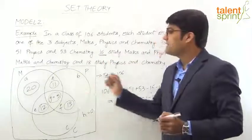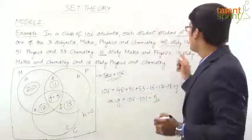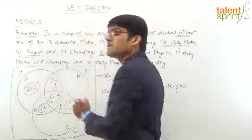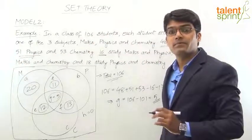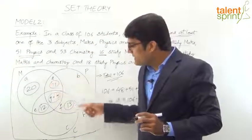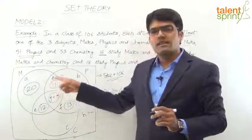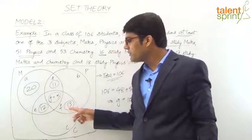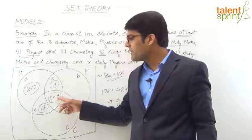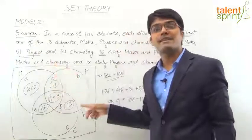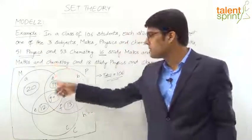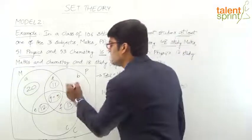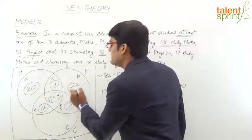For Physics (total 51): the already-filled regions are D = 11, F = 13, G = 5. Their total is 11 + 13 + 5 = 29. So the only-Physics region b = 51 − 29 = 22.